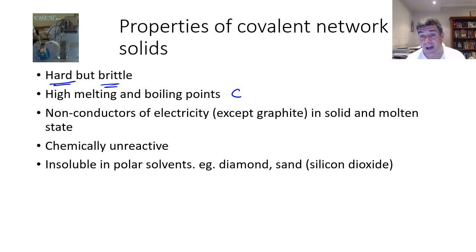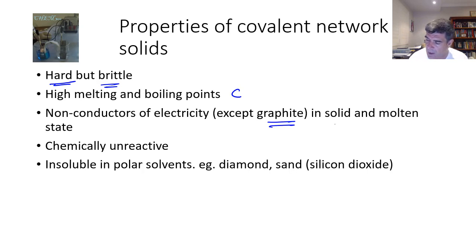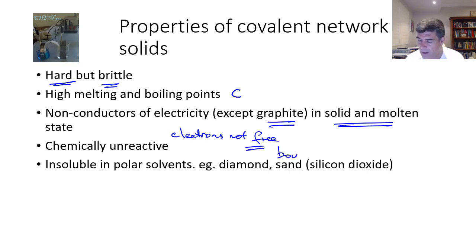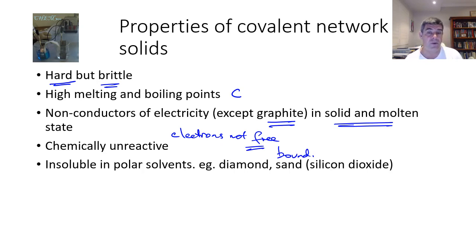With the exception of graphite, covalent networks are non-conductors of electricity, both in the solid and the molten state. The electrons are not free to move — even in the liquid form, the electrons are still bound. As a result, there are no ions, so there are no charged particles to carry or transfer energy, and therefore they are all regarded as non-conductors.